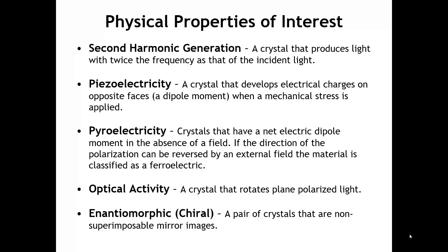A crystal that exhibits second harmonic generation will double the frequency of incoming light. The most familiar application of this might be something like a green laser pointer. There's a laser crystal inside that laser pointer that produces infrared light, and then you use a second crystal — a frequency doubling crystal — to halve the wavelength and double the frequency, and that produces green light.